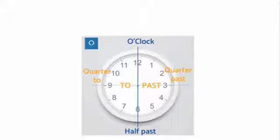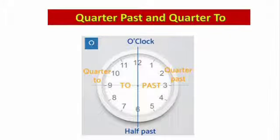Take a look at the wall clock. 12 represents o'clock. 6 represents half past. 9 represents quarter to. And 3 represents quarter past. But today, we will be focusing on quarter past and quarter to.